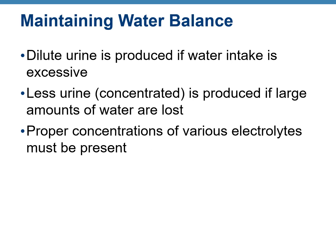How does the urinary system maintain water balance? If there is excessive water intake, the urinary system produces dilute urine. If water intake is insufficient and the body is becoming dehydrated, the volume of urine decreases and urine becomes more concentrated.